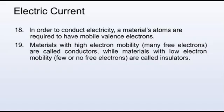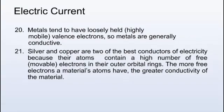Materials with high electron mobility, many free electrons, are called conductors, while materials with low electron mobility, few or no free electrons, are called insulators. Metals tend to have loosely held, highly mobile valence electrons, so metals are generally conductive. Silver and copper are two of the best conductors of electricity because their atoms contain a high number of free, movable electrons in their outer orbital rings. The more free electrons a material's atoms have, the greater conductivity of the material.